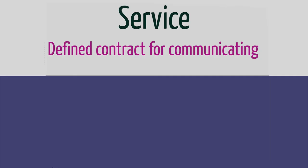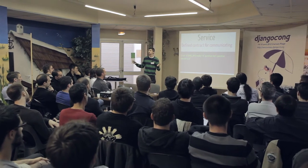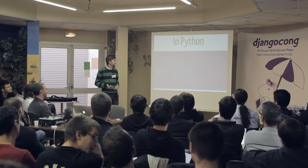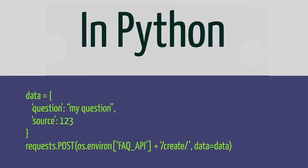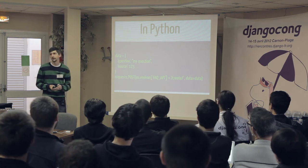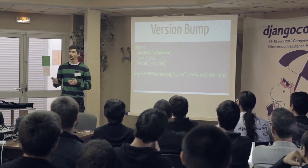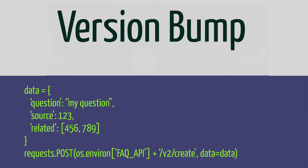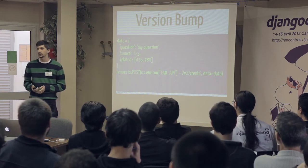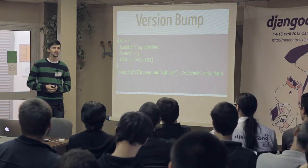Going back to what is a service: a defined contract for communicating. Say I curl to create a frequently asked question — I could do this in an app, basically have my FAQ creator, or I could call out to a service. With requests, we have data and we post it, and this creates a frequently asked question — in this case, something like 'how do I get to the conference?' And in this case, when we upgrade a version, we don't have to break everything. With an app, when you upgrade, everything in your project has to support that new version, or the app itself has to support backwards compatibility. This is a lot of management — I don't enjoy looking through code to find out what's breaking my application every time I upgrade something.